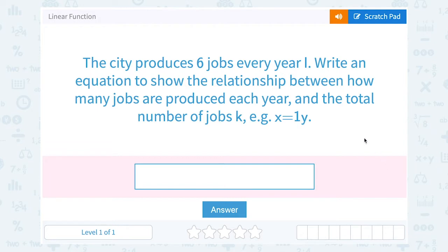The city produces six jobs every year L. Write an equation to show the relationship between how many jobs are produced each year and the total number of jobs K.